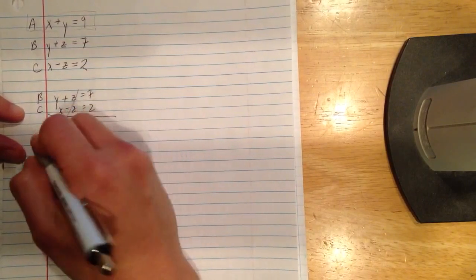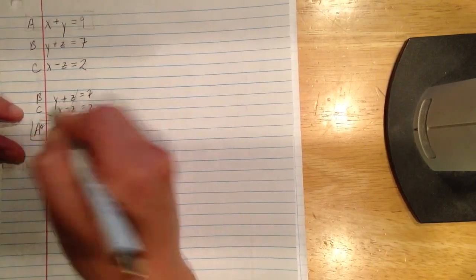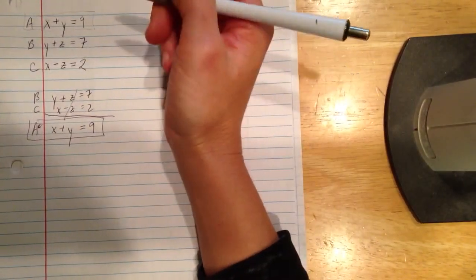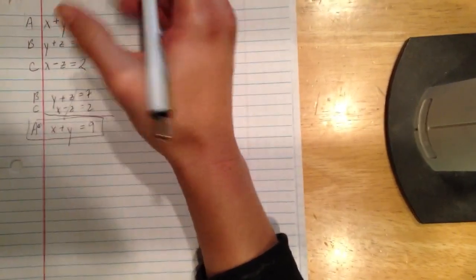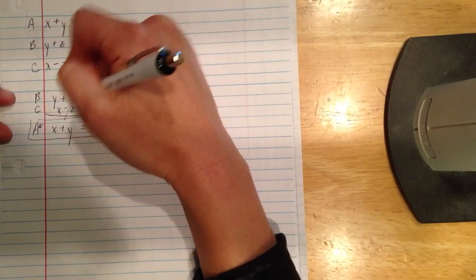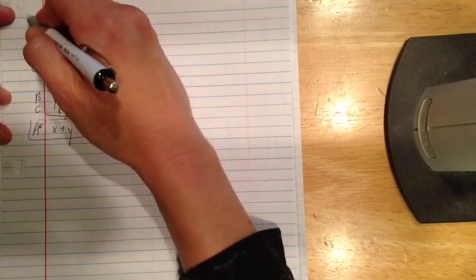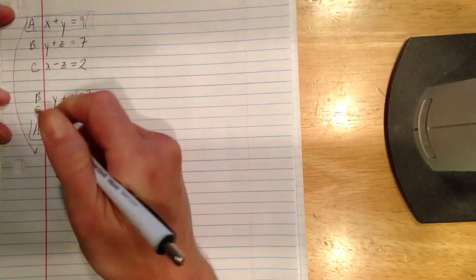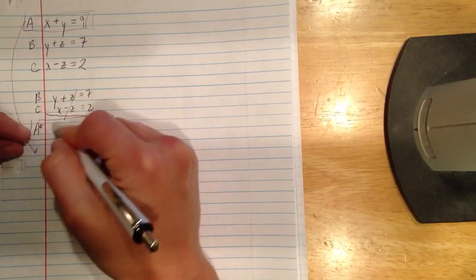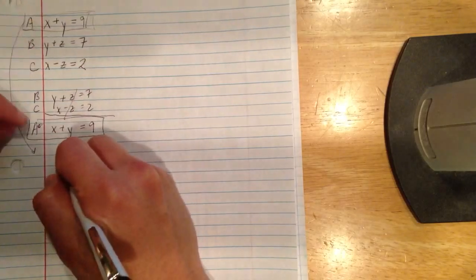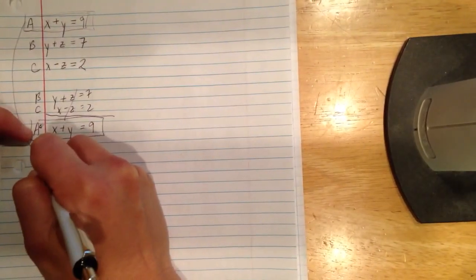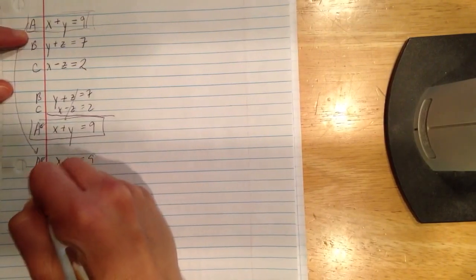And so this you can call like your a star if you want. And I can combine that with, I don't need to take another 2 and do my normal extra other step to eliminate the z's again because the z's are already gone in this one. So I want to just combine that with, combine my new equation, the x plus y equals 9. This is my a star, and this is my normal a.